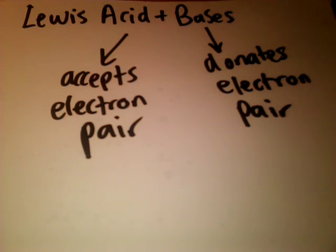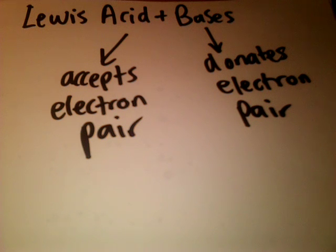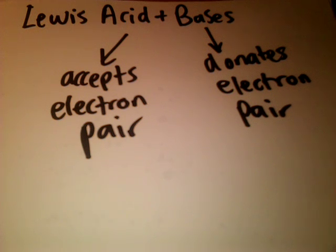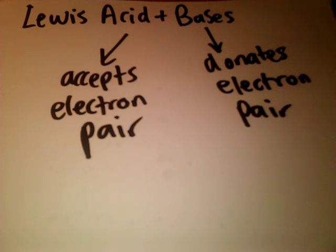When you're looking at Lewis acids, the Lewis definition of acidity is a much bigger definition than the Brønsted-Lowry definition, because it doesn't just include the H⁺ donors, but it includes other species like Mg²⁺, which also can act as a Lewis acid.